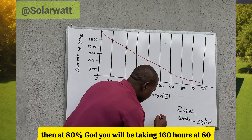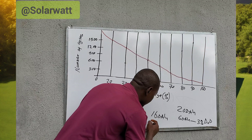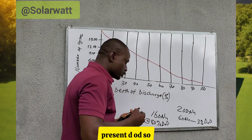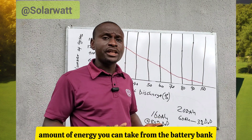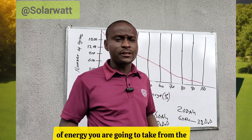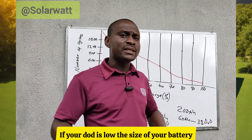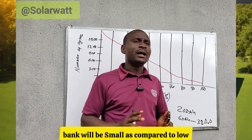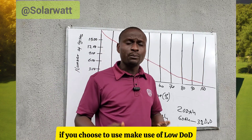At 80% DoD you would be taking 160 amp-hours. The higher the DoD, the higher the amount of energy you can take from the battery bank, and the lower the DoD, the lower the energy available. Also, if your DoD is low, the size of your battery bank will be large; if your DoD is high, the battery bank size will be smaller compared to using a low DoD.